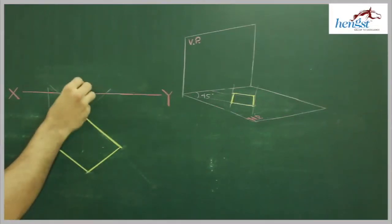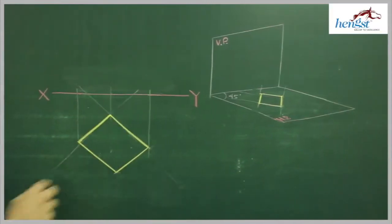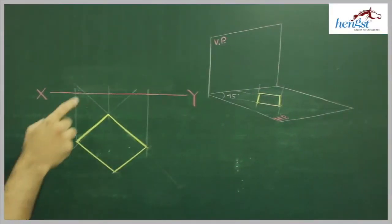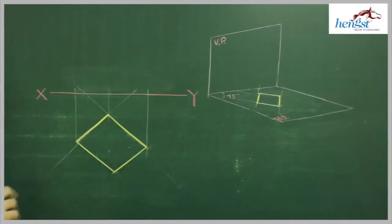And in front view, see in top view, you will see true shape. Since it is resting on HP, top view will give you true shape. So you can see that diamond shape in top view. But in front view, you will see a straight line.